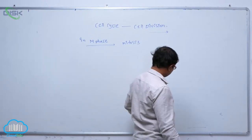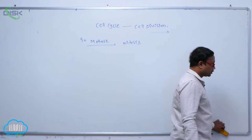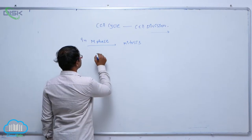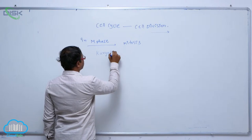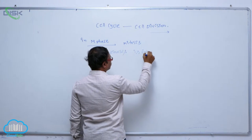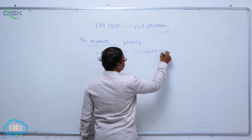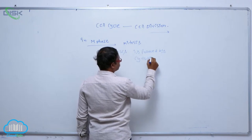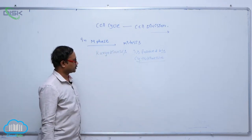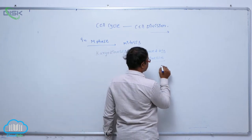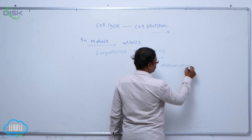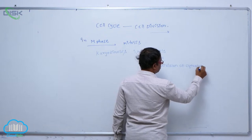After karyokinesis, it is followed by cytokinesis. Cytokinesis means division of cytoplasm. Karyokinesis is followed by cytokinesis, and cytokinesis means division of cytoplasm.